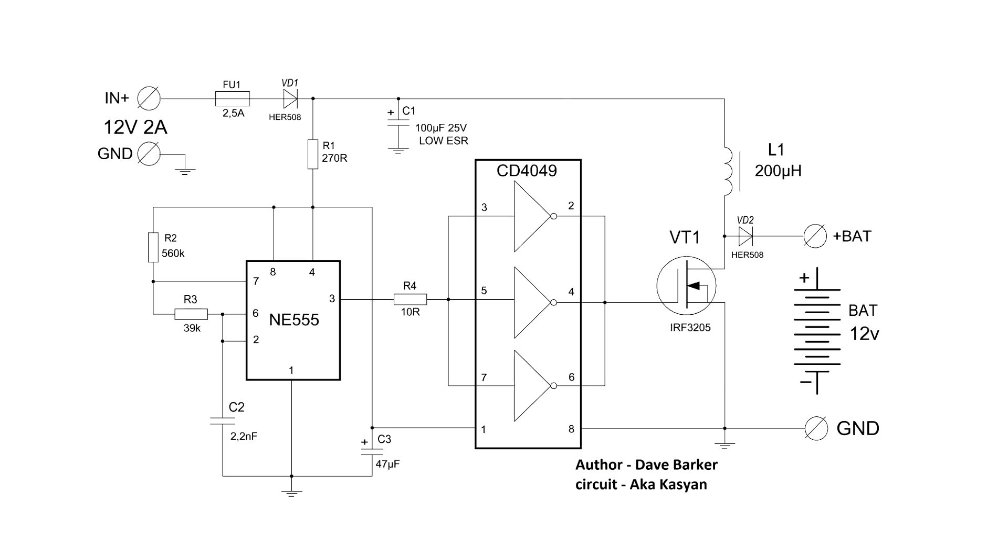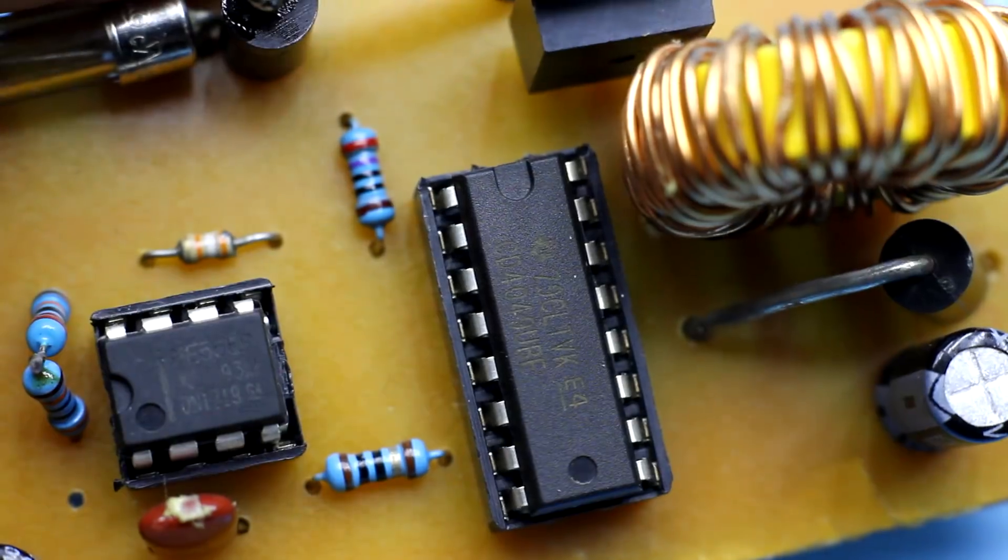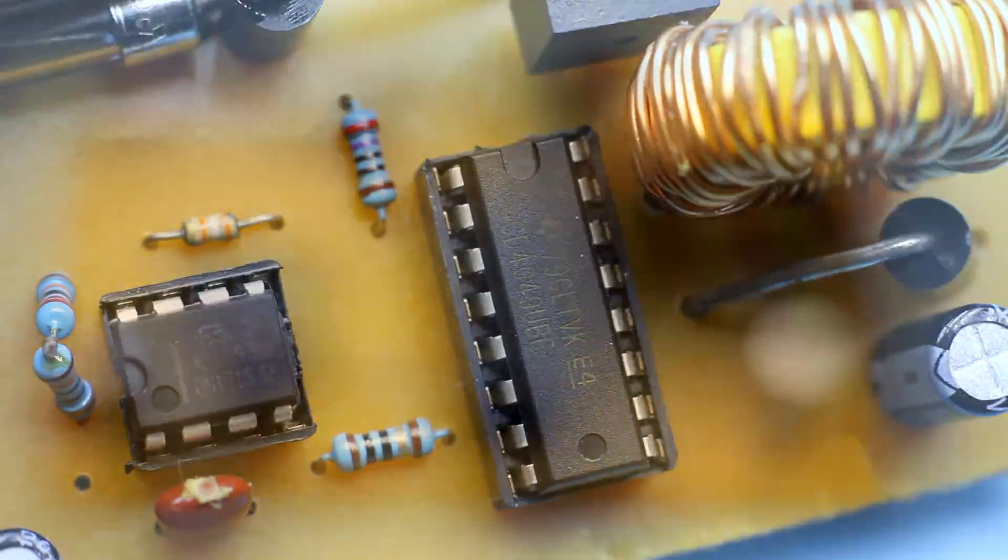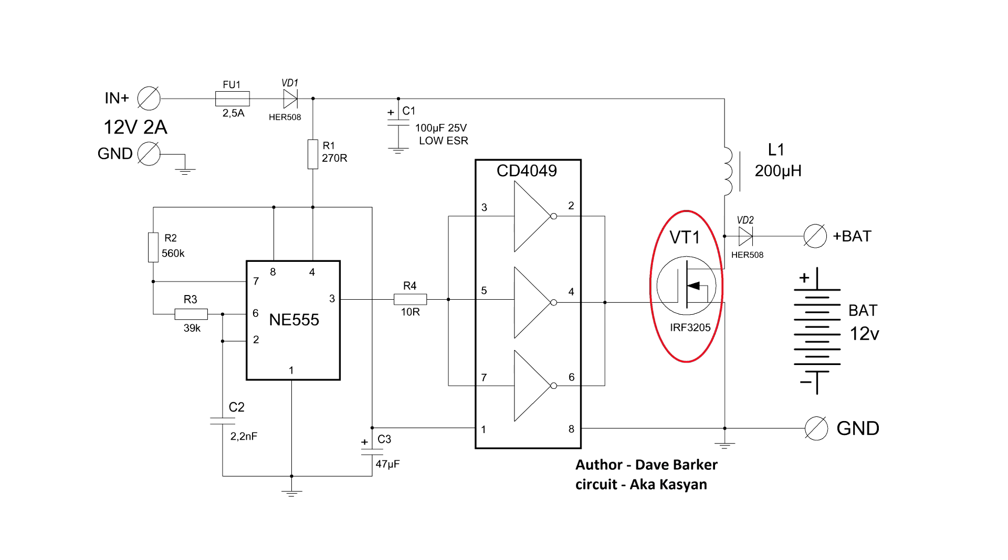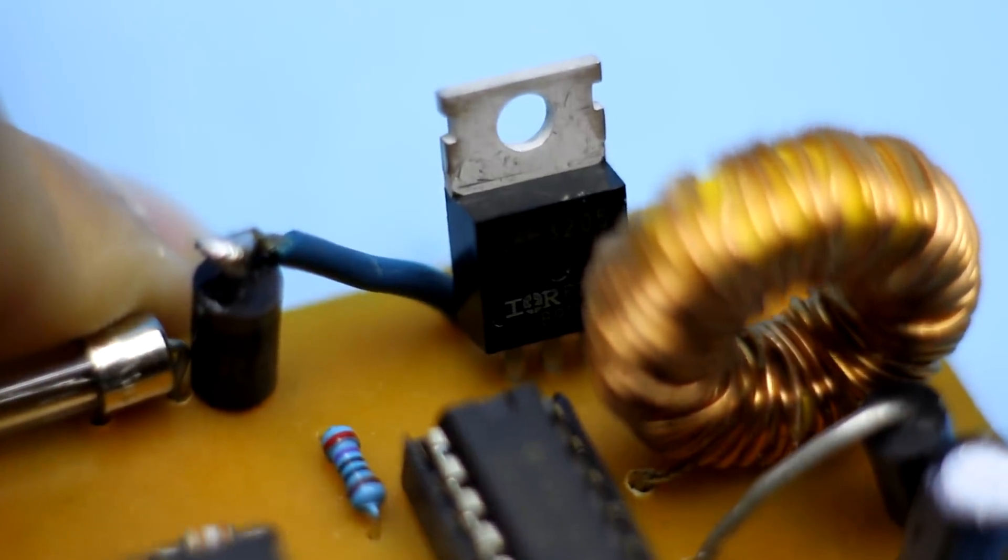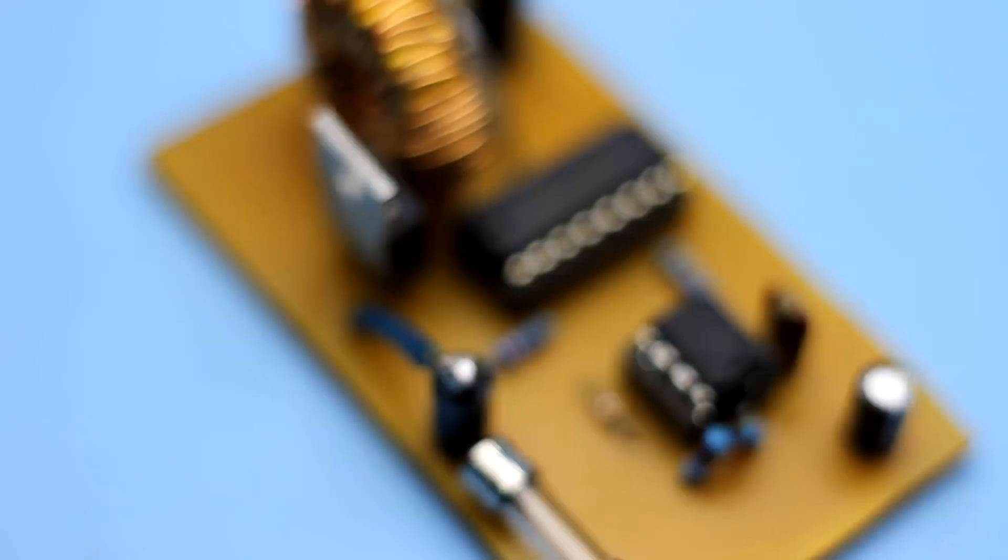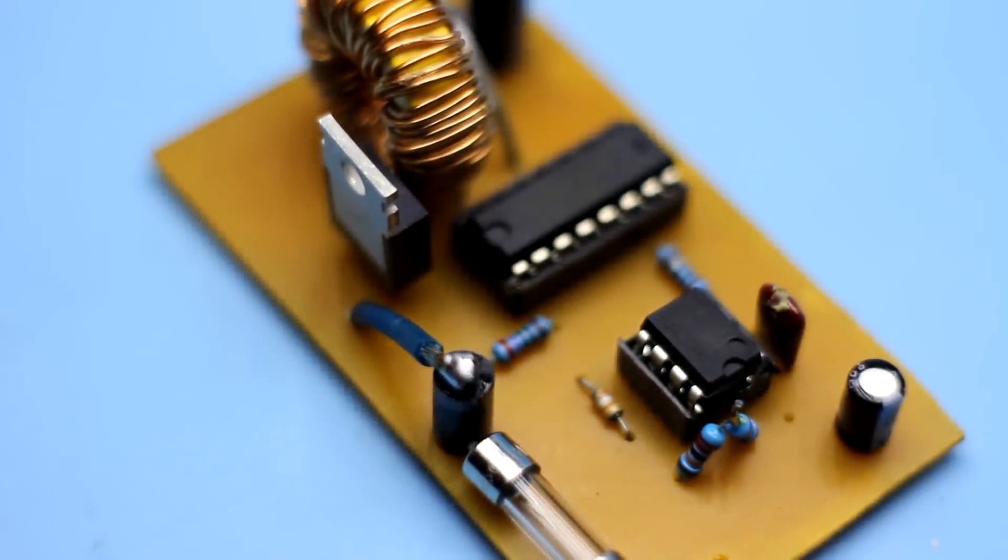About the components. Well, with the timer and logic everything is clear. In my case, they are installed on the panels for solderless installation. But I advise you to solder after checking the operation of circuit. Field effect transistor IRF3205 or any other N channel with voltage from 60 to 200V and current from 30A. I advise to install on a small radiator.